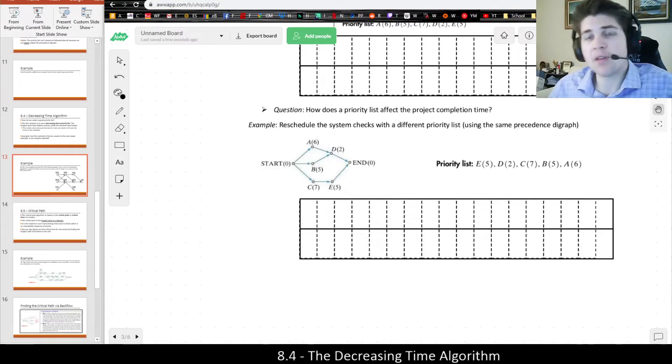I wanted to do just one more example of using a decreasing time priority list to solve a time scheduling problem. Let's actually return to the prior example and see what happens when we use a decreasing time priority list on the satellite launch example.